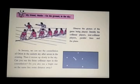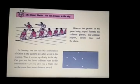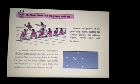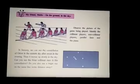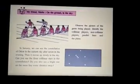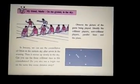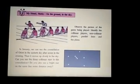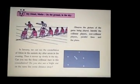Now another example: in January we can see constellation of Orion in the eastern sky after 7 in the evening. Then it moves up slowly in the sky. Can you see the three collinear stars in this constellation? Do you also see a bright star on the same line some distance away?